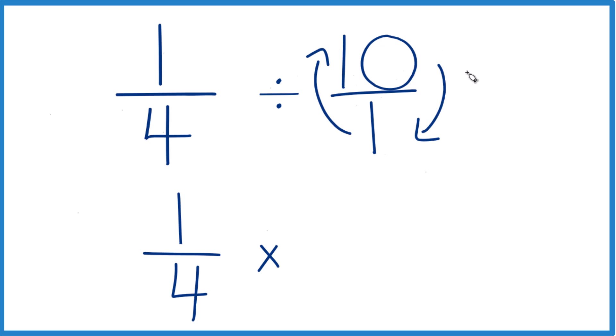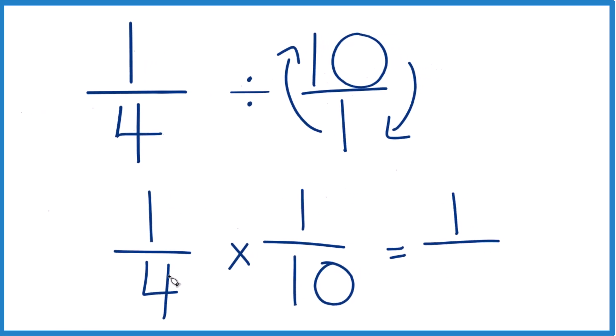So we have 1 on top, 10 on the bottom. So 1 tenth. And with multiplication, 1 times 1, we multiply the numerators and then the denominators. 4 times 10, that's 40.